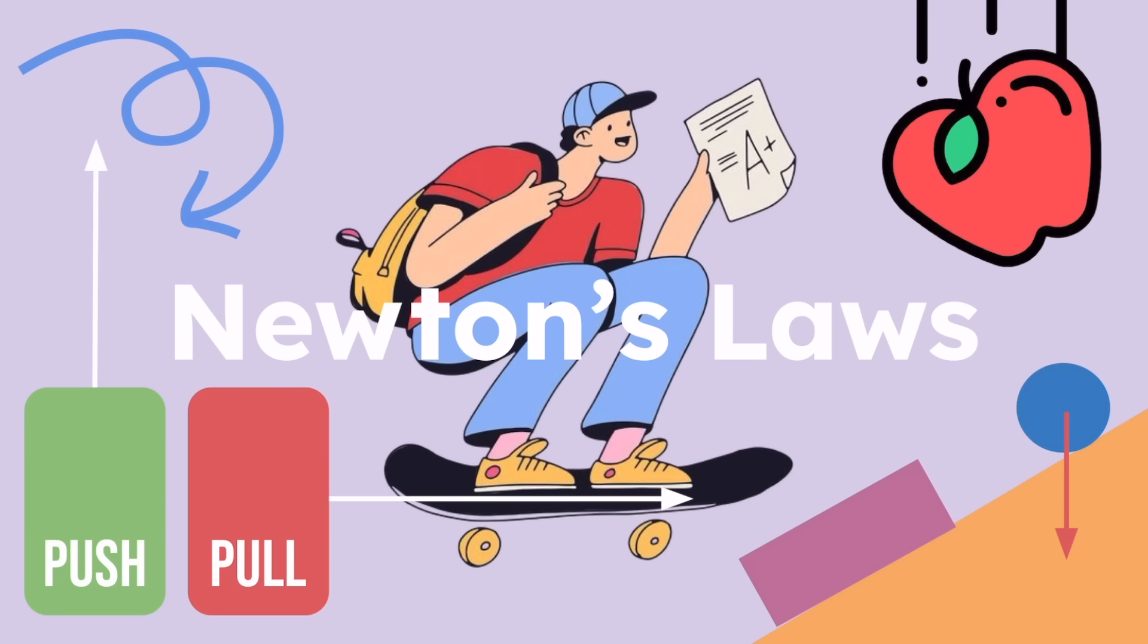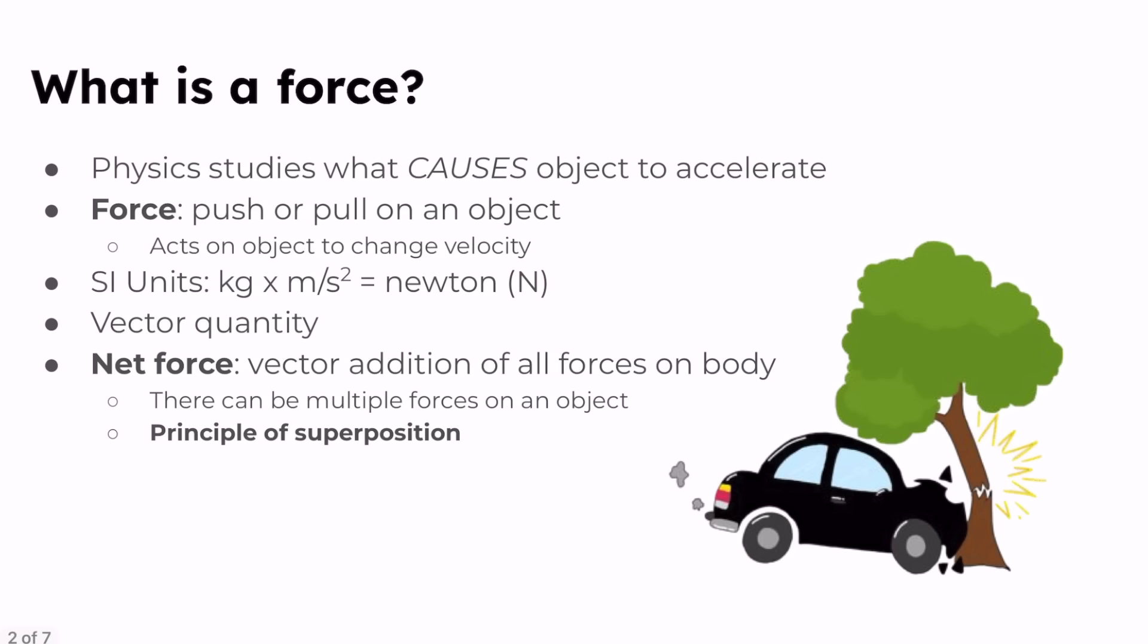Previously we have seen the part of physics that is the study of motion, like how objects move including accelerations and changes in displacement or velocity. Physics is also the study of what can cause an object to accelerate, and that cause is a force which loosely speaking is basically a push or a pull on the object. This force is said to act on the object to change its velocity.